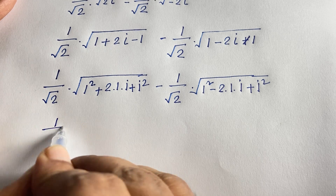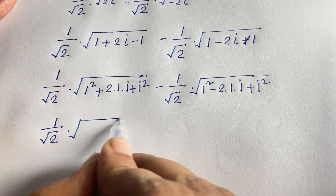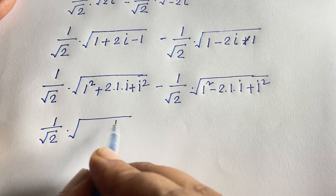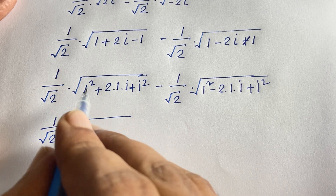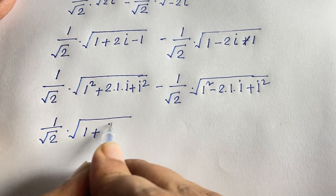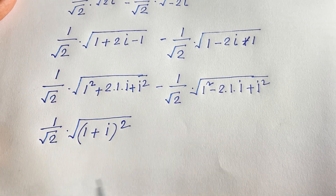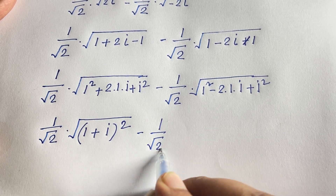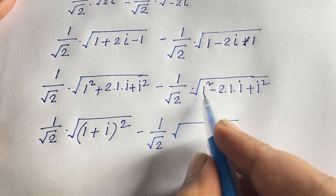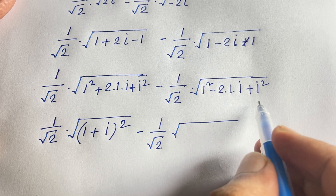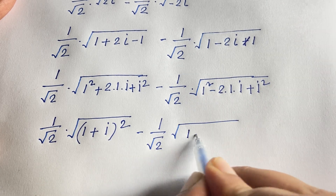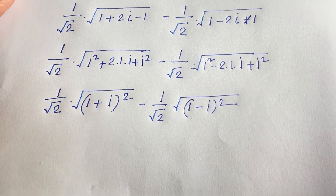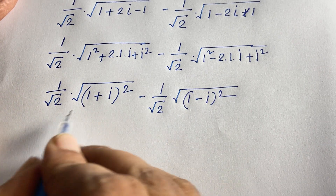So using the identity a² + 2ab + b² = (a + b)², the first part becomes (1/√2) · √((1 + i)²). And using a² − 2ab + b² = (a − b)², the second part becomes (1/√2) · √((1 − i)²).